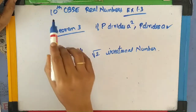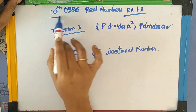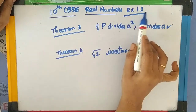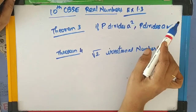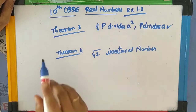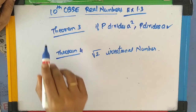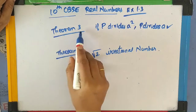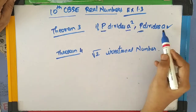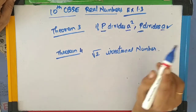Today we are going to see 10th CBSE Real Numbers Exercise 1.3. Before going into the lesson, we need to know two theorems — Theorem 3 and Theorem 4 as per the book.